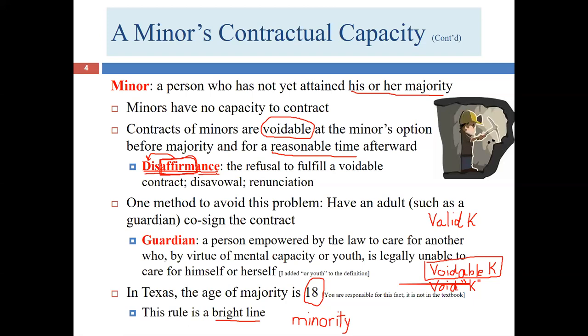As you can imagine, most adults — especially legally savvy ones — will be hesitant to contract with a minor because the minor can disaffirm. If the contract starts going really well for the other party, the minor might say it's not working so well for me and walk away. That's an unfair advantage. The solution is to have an adult also sign the contract — cosigning — so the adult remains bound even if the minor disaffirms.